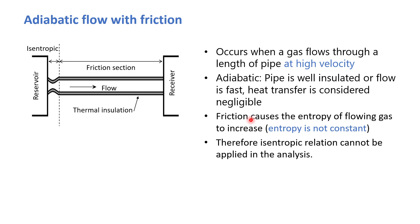In adiabatic flow with friction, we have a reservoir — a continuation of the concept learned before. Gas flows from the reservoir through a converging-diverging nozzle where friction is very low and heat loss can be ignored. But when the fluid then flows through a long pipe or long conduit, friction can no longer be neglected.